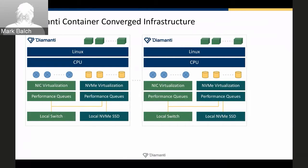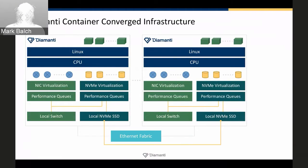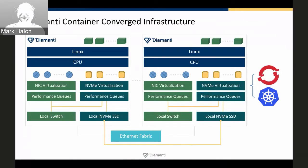We cluster together multiple appliances, beginning with three nodes for high availability and load balancing, scaling up as needed. All nodes are connected using standard 10-gigabit Ethernet in your existing data center — no forklift, no complex network topology. Compute, network, and storage resources are all pooled and shared across the cluster, providing workload mobility: a persistent volume can be accessed from any node. Network segmentation also applies across the entire cluster, and all of this plugs into a standard OpenShift Kubernetes environment, fully automating application deployment and management.